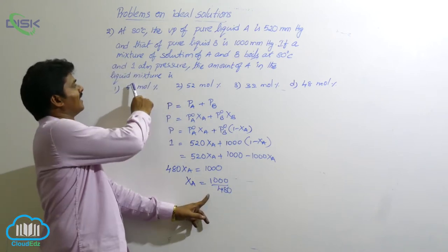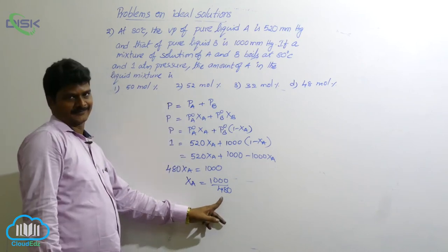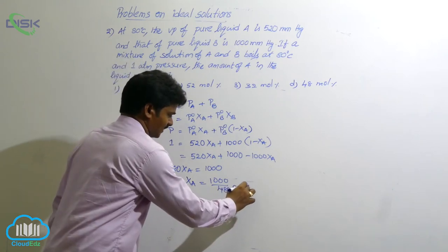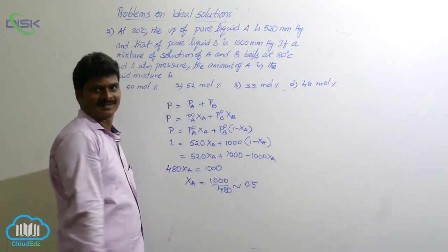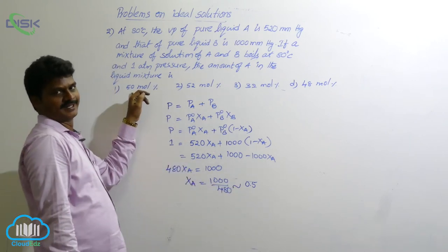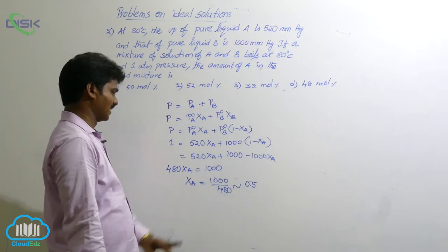1000 by 480, here we need the approximate value, not exact value. So it is nearly 1000 by 500, which is approximately 0.5. So 0.5 means nearly 50 mole percent.